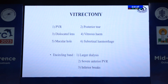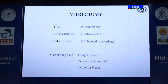Vitrectomy is recommended when there is suspicion of PVR changes, dislocated lens, associated macular hole, posterior tear, or subretinal hemorrhages. An encircling band is advisable along with vitrectomy when there is larger dialysis, more anterior severe PVR, or inferior breaks.